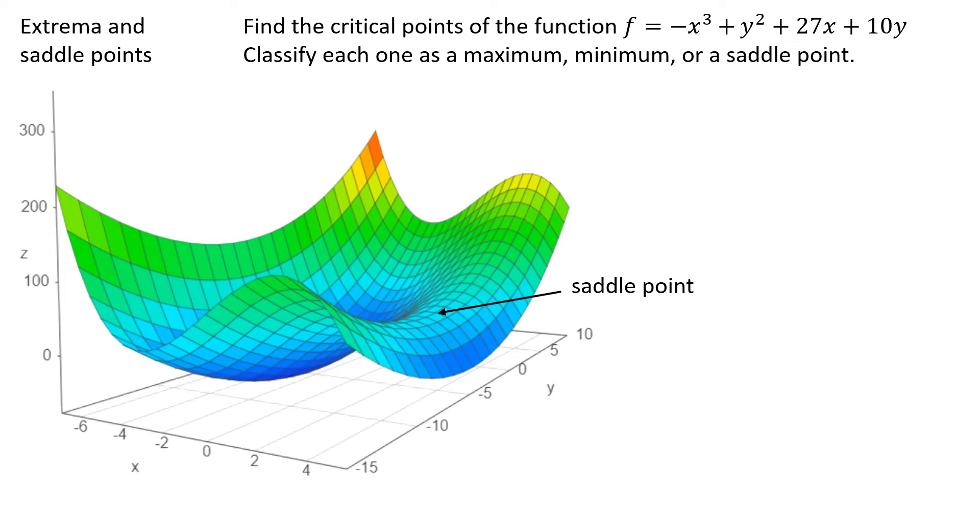Saddle point is a funny phrase, but it essentially means a point where the curve is flat, the surface is flat, but it's neither a minimum or a maximum. You can see how this point would match that description. There don't appear to be any maximum points on this surface, but maybe there are somewhere else. We're not looking at the entire thing here.